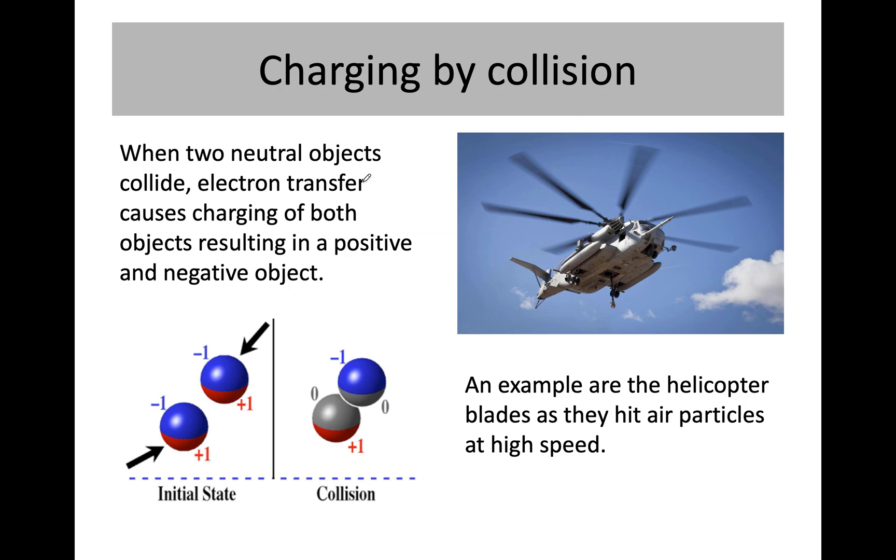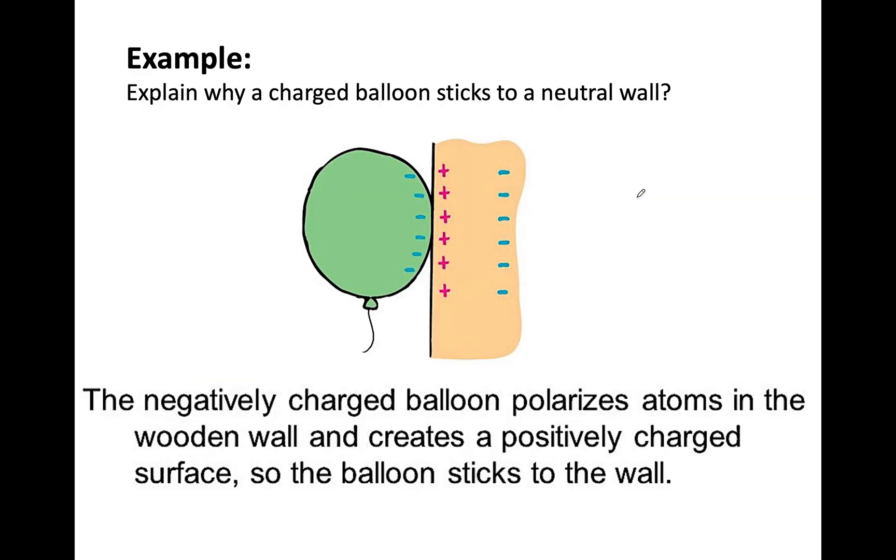By collision, it's the same idea. When these neutral objects collide with each other, electrons can get knocked off, switched from one atom to another atom. Like this helicopter blade when it hits the air particles at high speed.